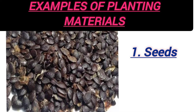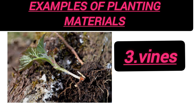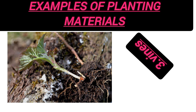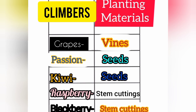Planting materials refers to the type of materials planted to establish a plant. Examples of planting materials are: seeds, stem cuttings, and vials. Here they are again — seeds, vials, and stem cuttings.